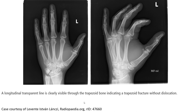As we see here in this image, in the AP and oblique views, you can see clearly a line across the trapezoid. The trapezoid is more appreciated from the oblique view.